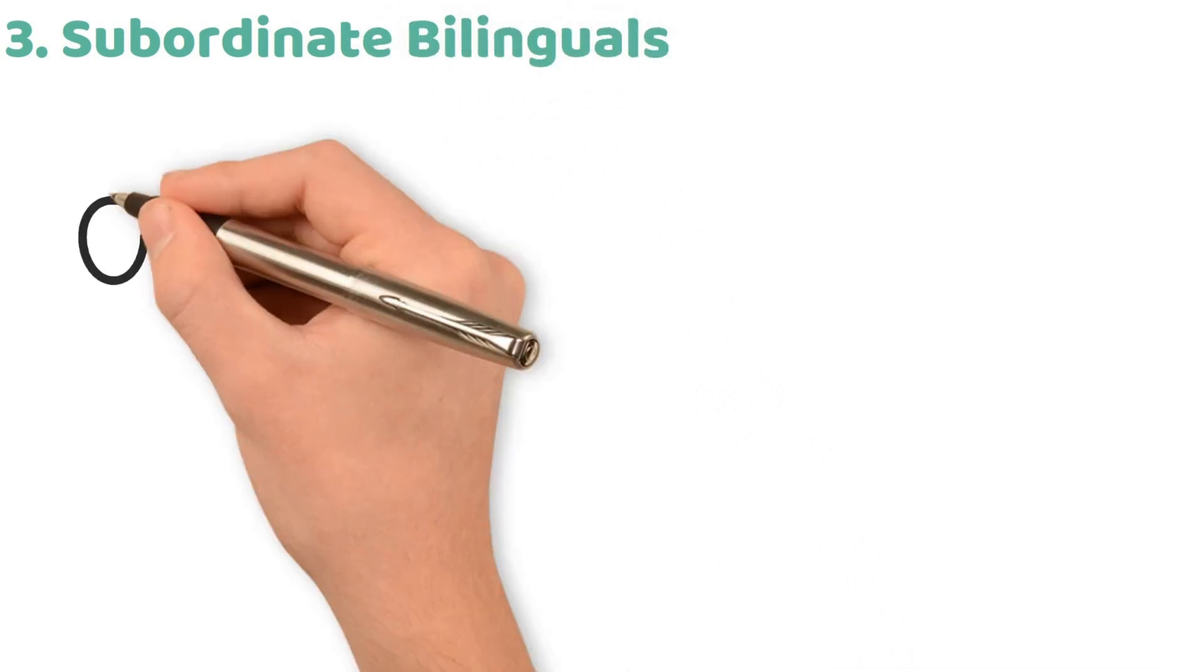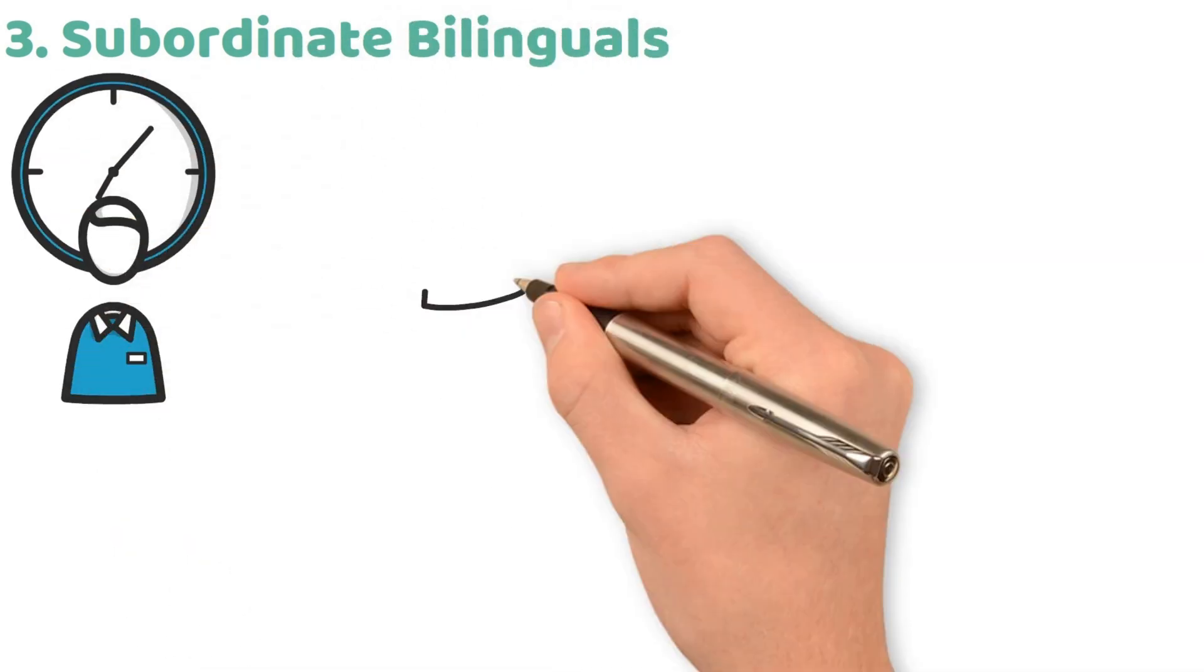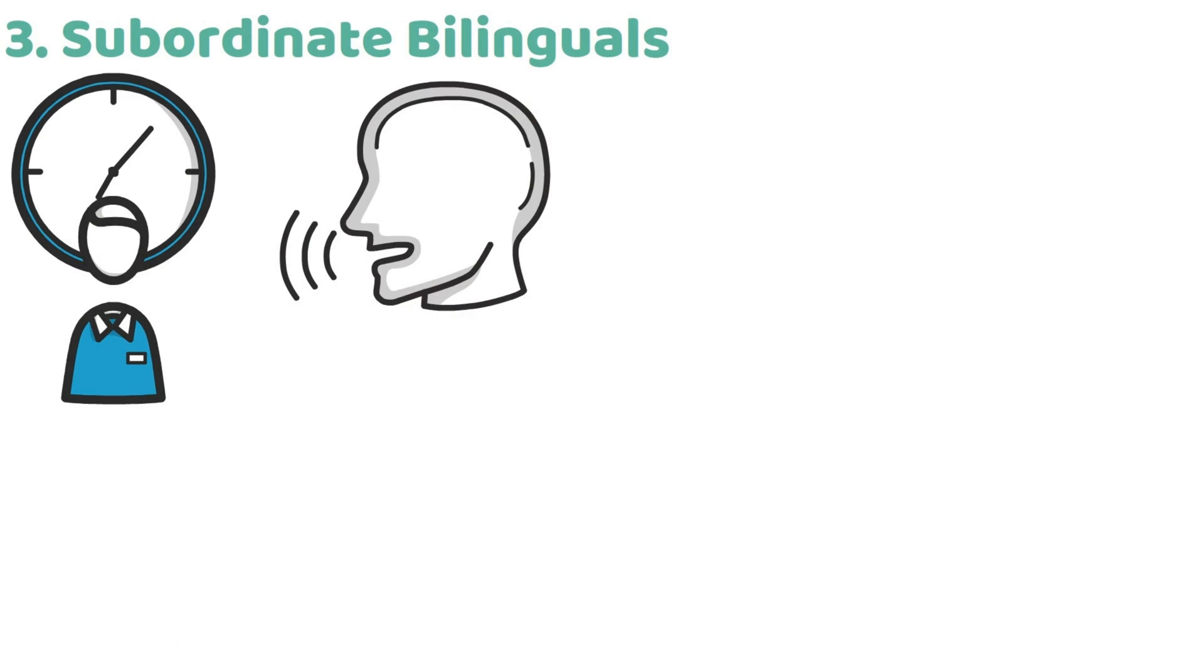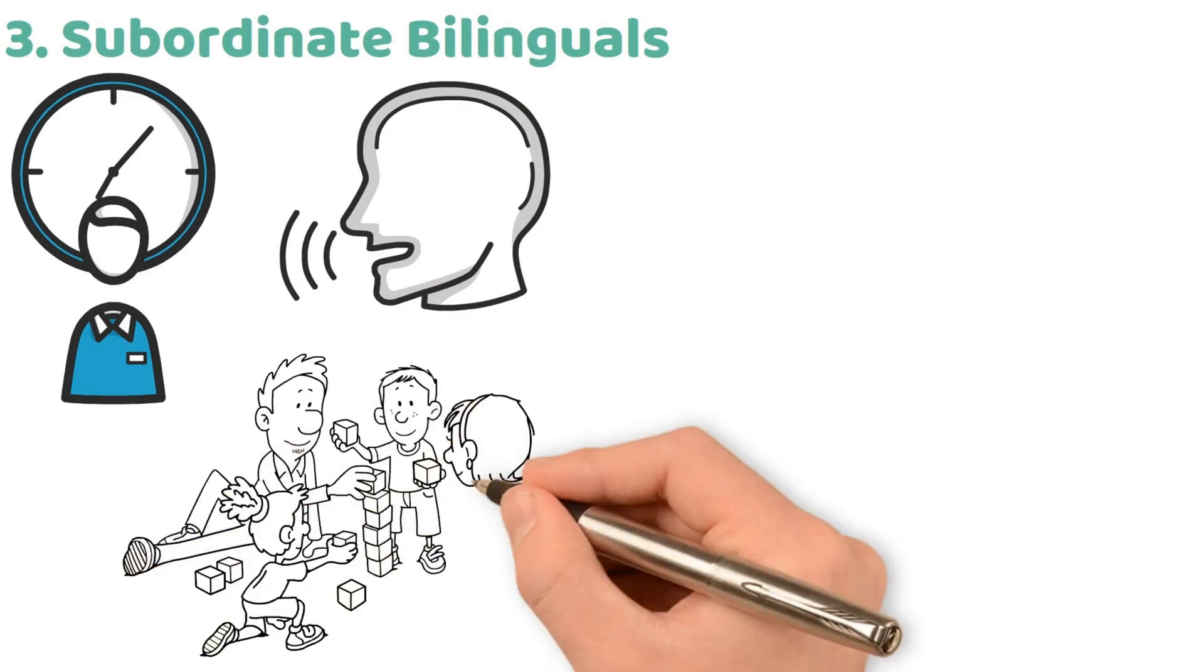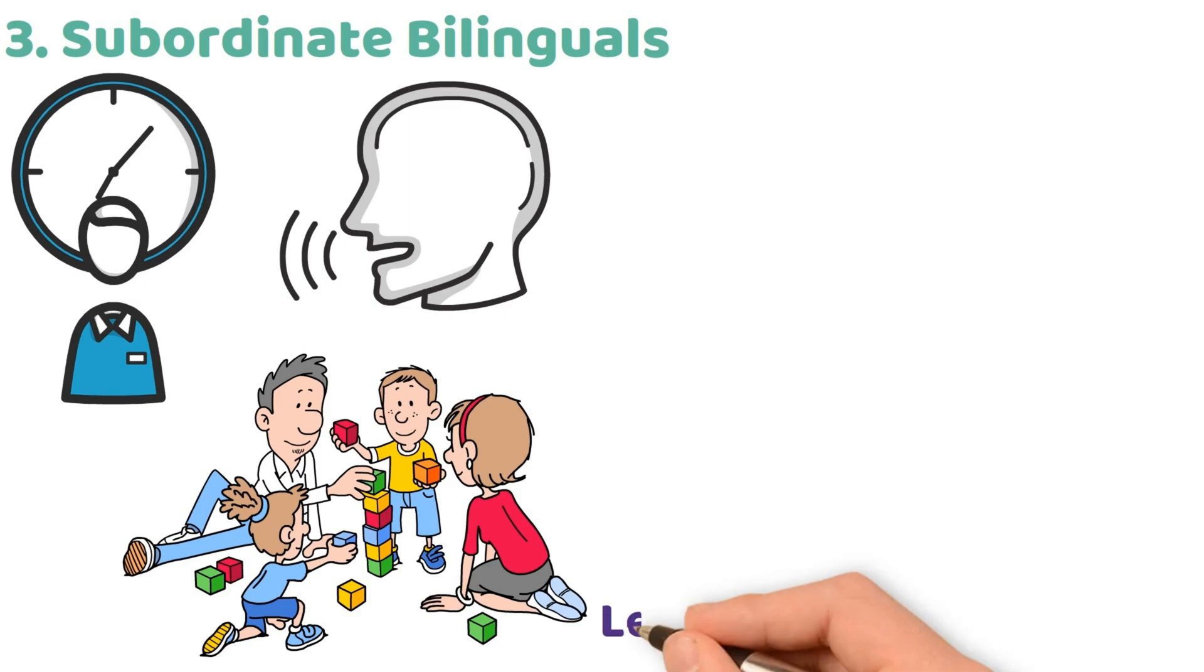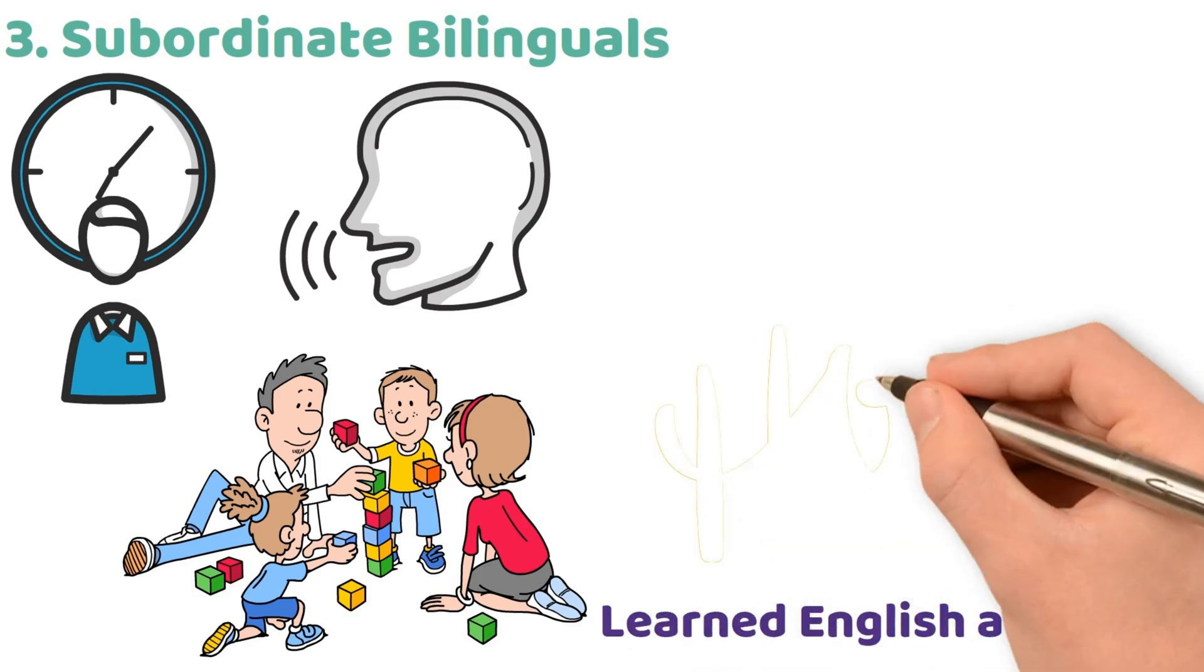Subordinate bilinguals typically learn a second language later in life, often using their native language as a base. Gabriela's parents are a perfect example. They learned English as adults, initially translating from their native Spanish before achieving fluency.